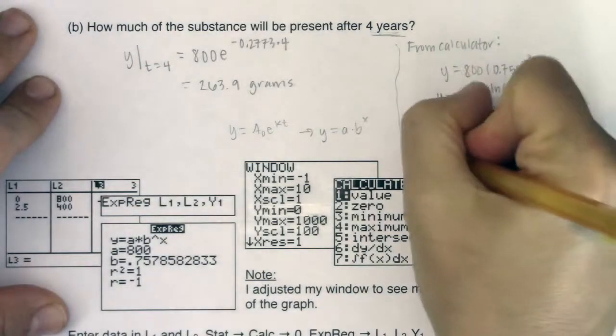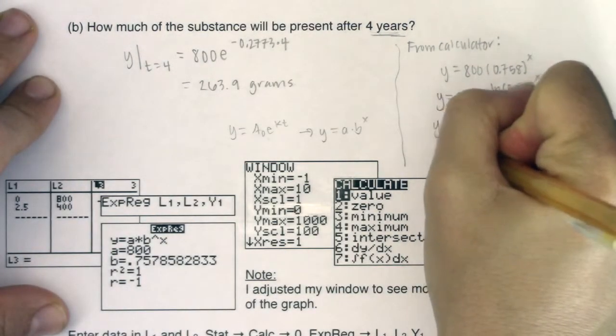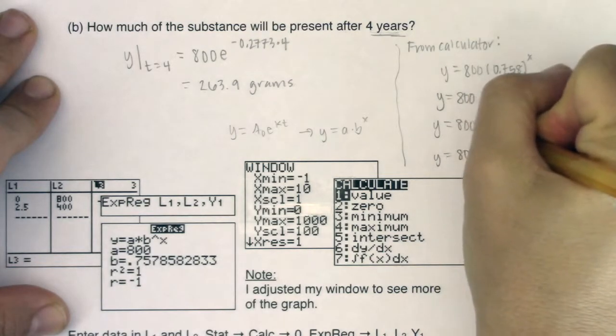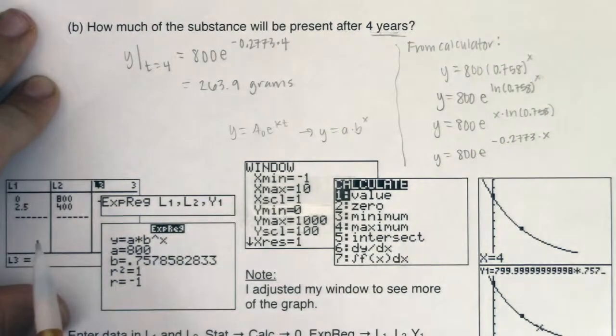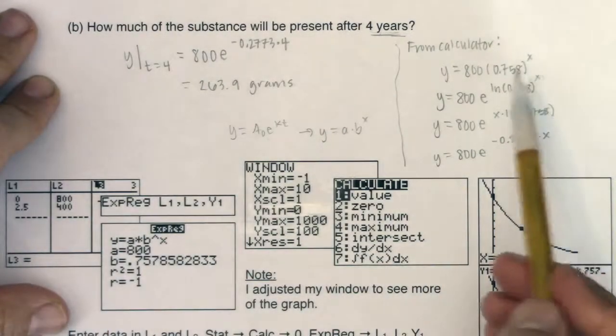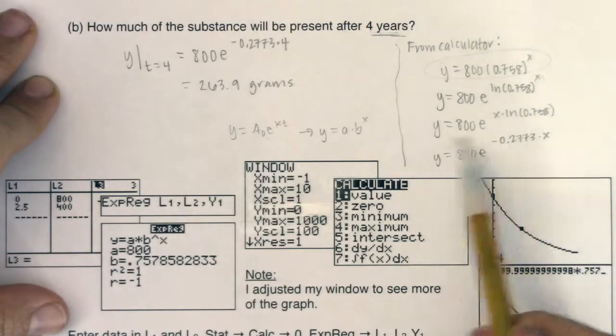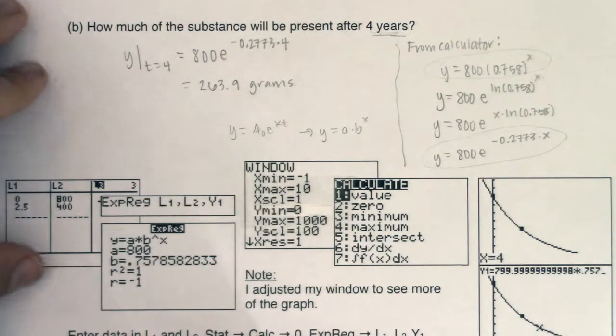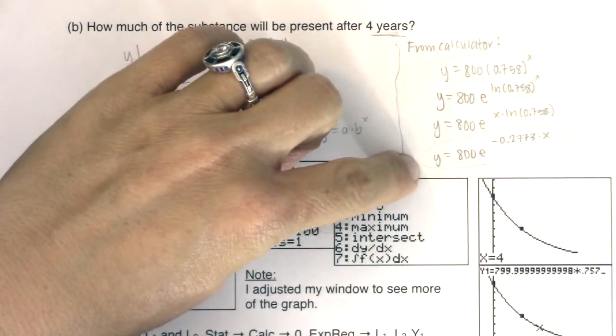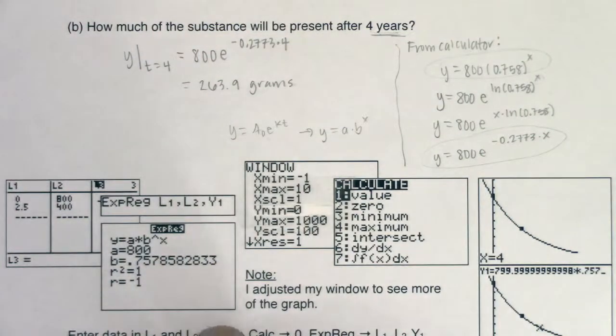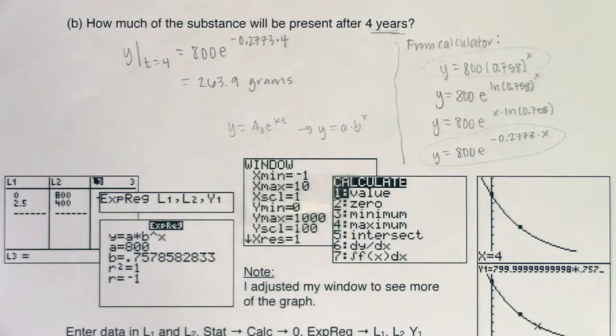I have y is equal to 800 e to the x times the natural log of 0.758. Let's see what the natural log of 0.758 is equal to. I'm going to try and float all of these decimals: 0.7578582833. What is that equal to? Negative 0.2773, which should seem pretty familiar. So this is 800 e to the negative 0.2773 times x, or as we had been using it before, times t. You can see that these are the same models. Calculus folks and myself included, I usually work with the base e model just because we have that natural log button on our calculator, and it's just that much simpler for me to manipulate these equations.